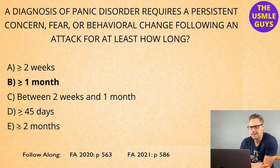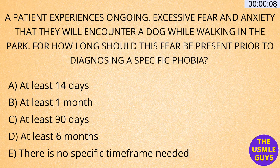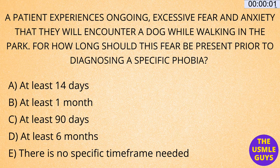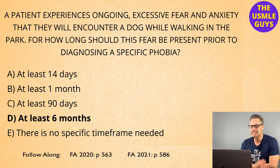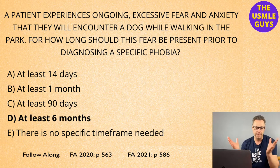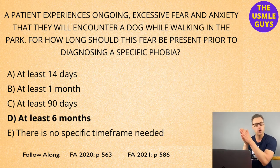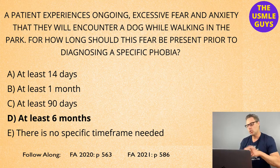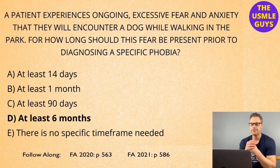Go ahead and hit that pause button and then come on back when you think you've got the right answer. The correct answer here is D — at least six months. A specific phobia is unique in that the patient has a phobia to a very specific object or situation. In order to make this diagnosis, you need to see that fear for at least six months or more.